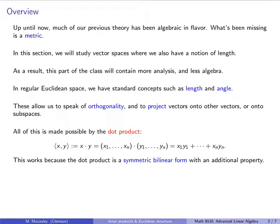Up until now we've probably seen the dot product written as x dot y, but going forward we will write it with angle brackets. I will often still say 'x dot y' because dot is a very convenient verb in this context. We know how this is defined: take the n-tuples of the vectors, multiply corresponding entries, and add them up.